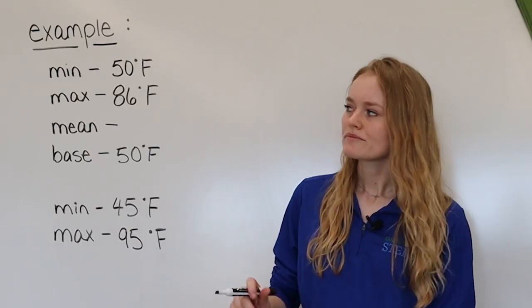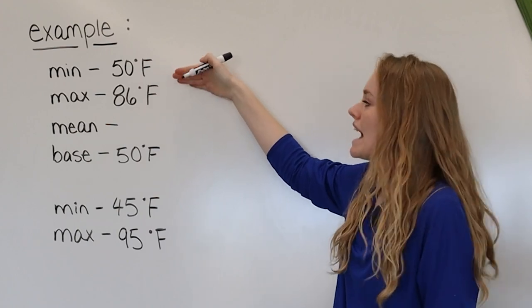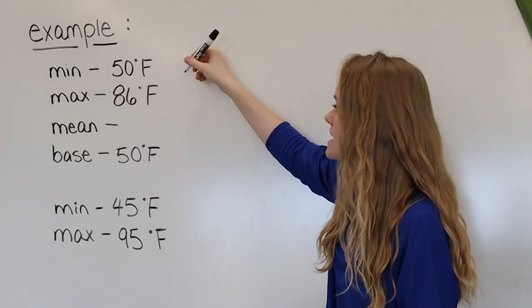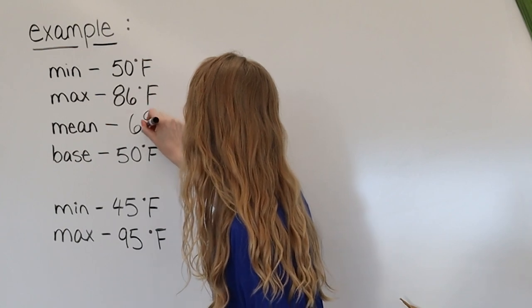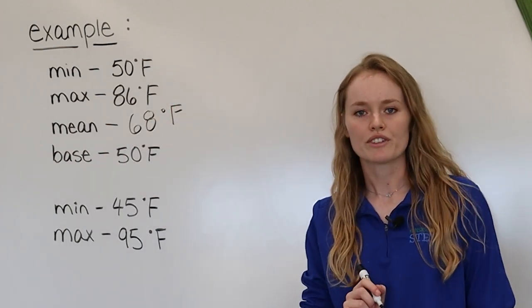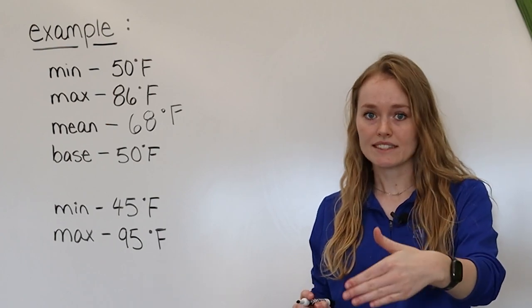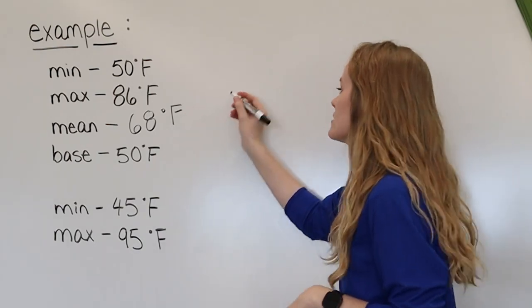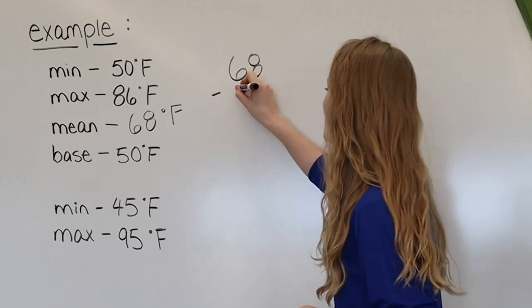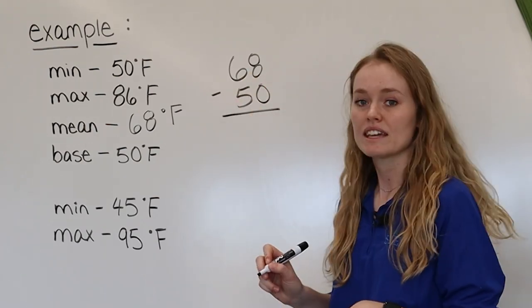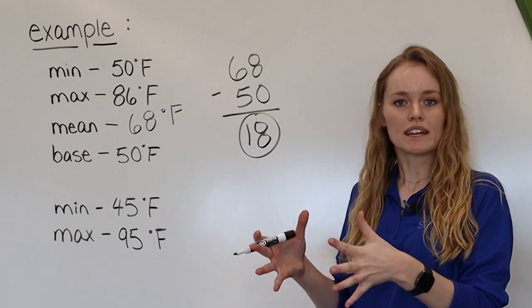Let's do some examples. On our first day, we had a minimum temperature of 50°F and a maximum temperature of 86°F. The mean — adding them and dividing by 2 — gives us 68°F. To find the growing degree units for that day, we take the average temperature of 68 and subtract the base temperature of 50, which gives us 18. So on this day, corn accumulated 18 growing degree units.